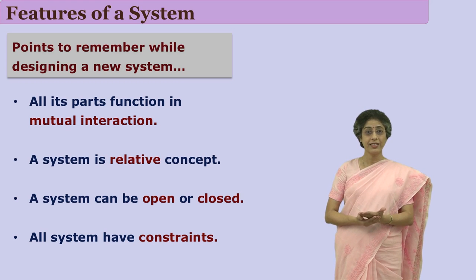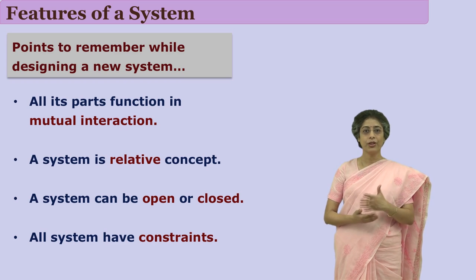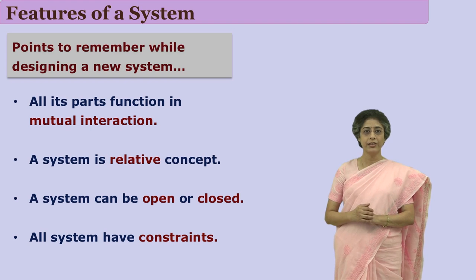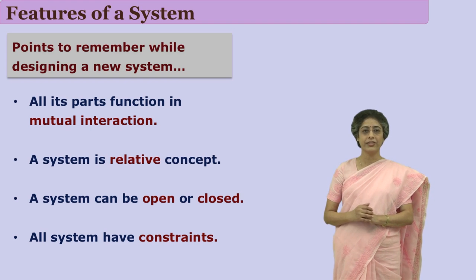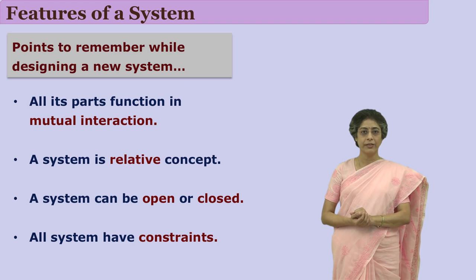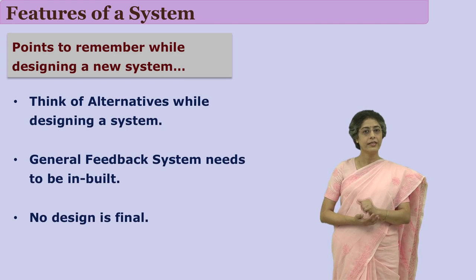All systems have constraints. Educational systems or any systems where components are human and non-human are bound to have some constraints. For example, if a particular part of a machine gets slowed down, that is considered a constraint. If a particular person's attitude is negative, that is a major constraint to the system.